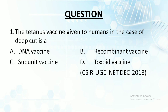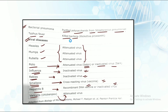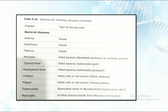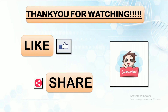Let's quickly solve a previous year question: the tetanus vaccine given to humans in case of a deep cut is a type of which vaccine? As we just discussed, in case of tetanus disease we use the toxoid vaccine. Hence option D — toxoid — is the direct answer. Direct questions have been framed from this table itself, so make sure you remember it very well.